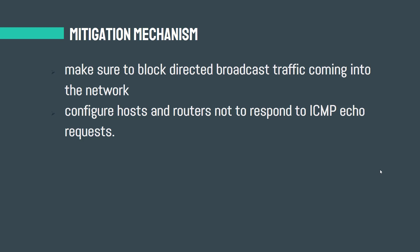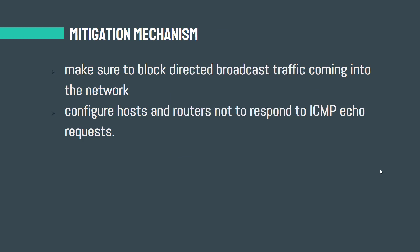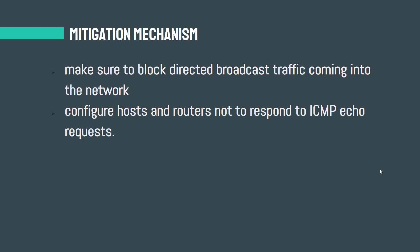In different videos or papers you may encounter a name called the Fraggle attack. From a strategic point of view, the Fraggle attack is the same as the Smurf attack. The only difference between the Fraggle attack and the Smurf attack is the type of traffic used. The Smurf attack uses ICMP traffic, but Fraggle uses UDP packets. That is the only difference; strategically, both are the same.